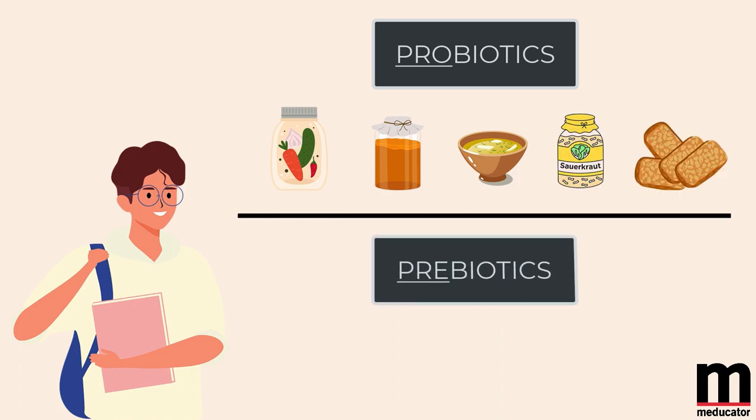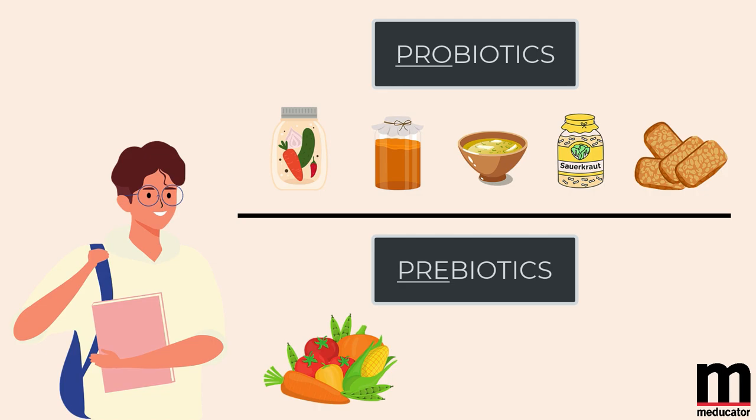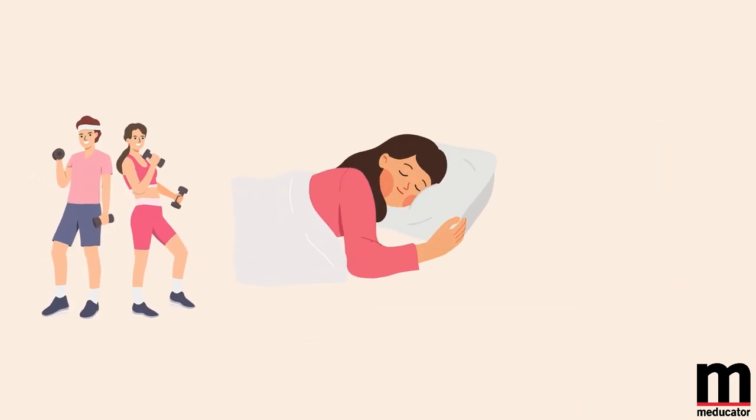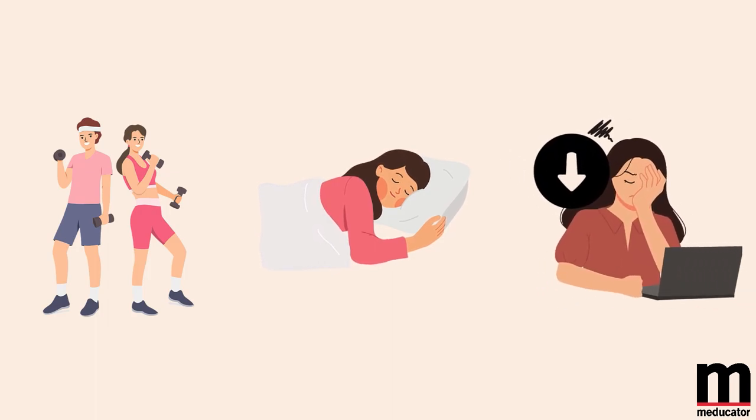Eating more prebiotic fibers from vegetables and whole grains is also important as many microbes feed on this fiber. Taking care of yourself with regular exercise, consistent sleep, and reducing stress will all help our tiny friends in the gut as well.